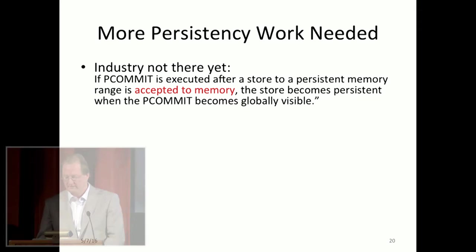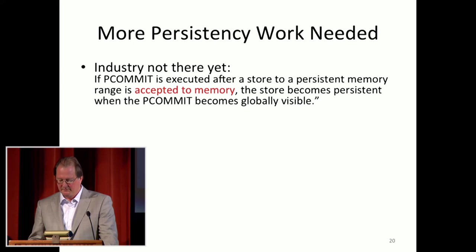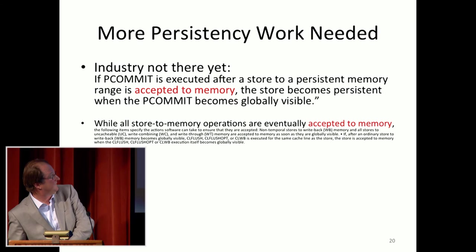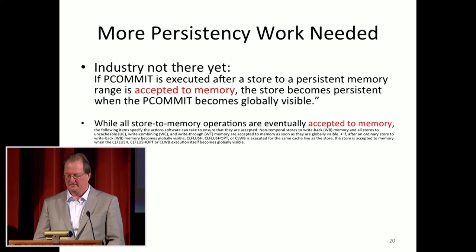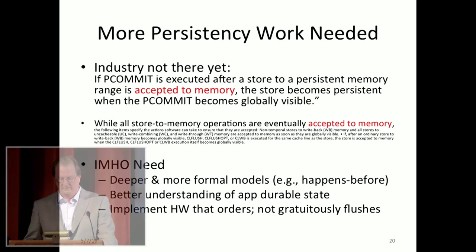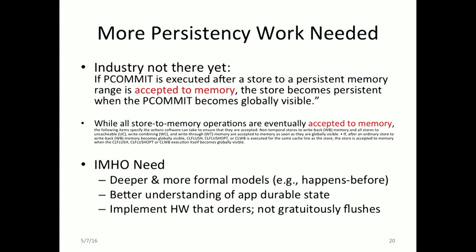pCommit is about putting things in persistent memory. If pCommit is executed after a store to persistent memory in a range that is accepted to memory, a store becomes persistent when the pCommit becomes globally visible. 'Accepted to memory' means all store-to-memory operations are eventually accepted to memory. In my judgment, this is not okay — it's too complicated and too informal. To get a deeper understanding, we have to actually understand what needs to be durable and not gratuitously flush things because that costs time.